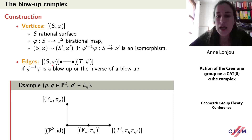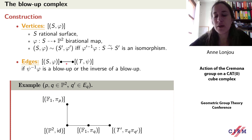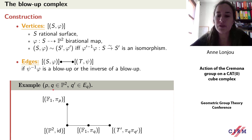We put an edge between two vertices if we have two representatives such that phi' inverse composed with phi is a blow-up or the inverse of a blow-up of a point. These elementary blow-up maps are our edges. For example, blowing up a point p in P2 gives one edge, and blowing up a point q gives another edge.